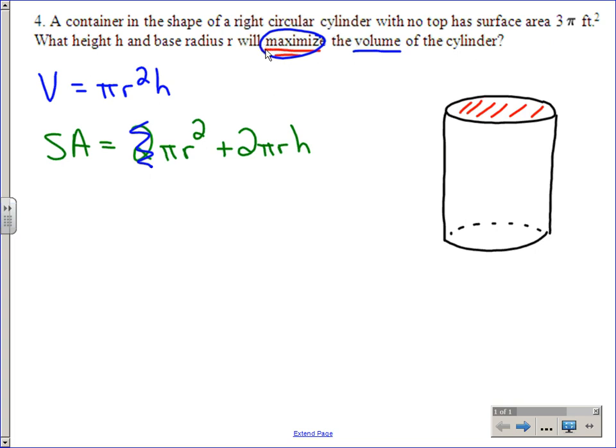We know that it has a surface area of 3π. So I'm going to substitute that in: 3π equals πr² plus 2πrh.